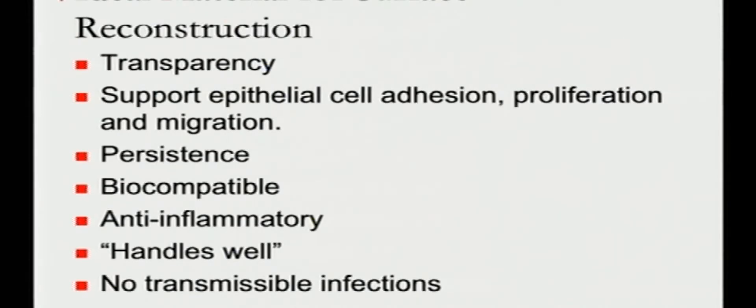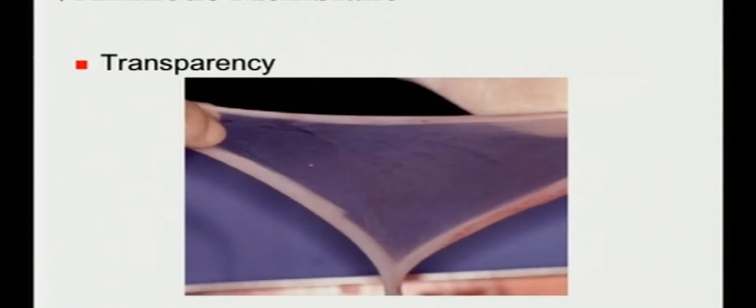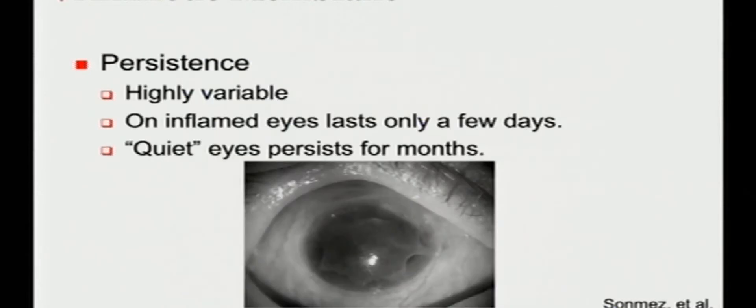We're actually developing new engineered biomaterials which might make amniotic membrane less used and provide something else. So what would be an ideal material for surface reconstruction? It should be transparent. It should support the growth of epithelium. It should persist for just the right amount of time. Of course it needs to be biocompatible, preferably anti-inflammatory. It should be easy to use surgically and it shouldn't be able to transmit infections. Amniotic membrane isn't always perfectly transparent as you might know. It can persist in uninflamed eyes for months.